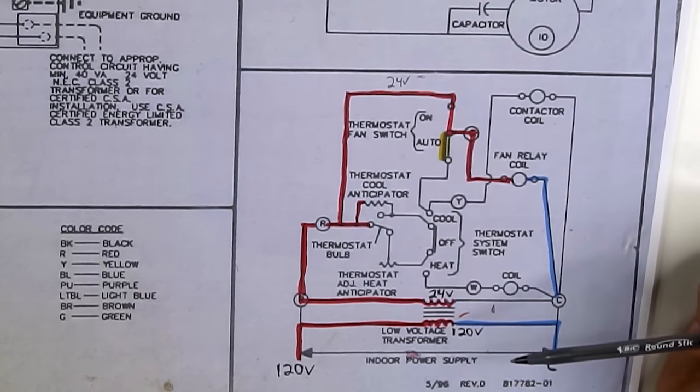That's about it for the first wiring diagram. The other two will go a little faster since I've already gone over all the basics. Here's our second wiring diagram — it's also pretty simple, nothing too complicated. Unlike the first one, the thermostat or low voltage diagram just has a Y and a C going to the contactor coil, and that's it. The first one was way more detailed.